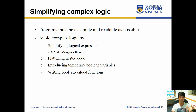Let's look at simplifying logics, because the longer your logic is, the harder it is to evaluate and check whether you have good coverage of different scenarios. Our goal is that programs must be as simple and readable as possible. We have different ways to avoid complexity. First is simplifying logical expressions — why write long expressions when we can simplify them using De Morgan's theorem, which we'll cover shortly. You can also flatten nested code.